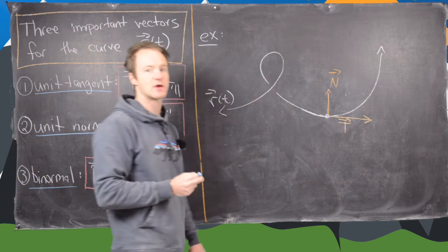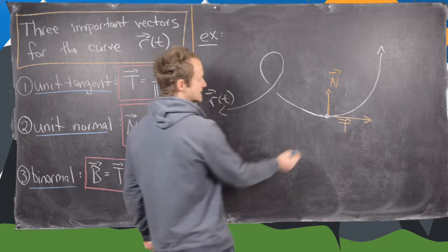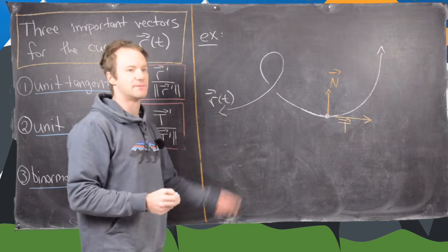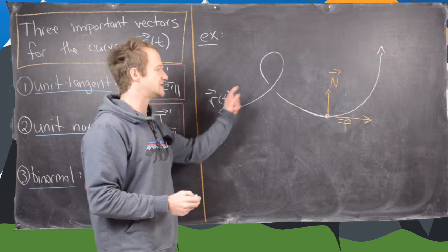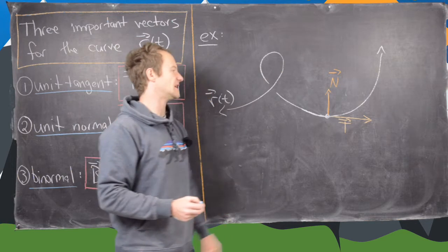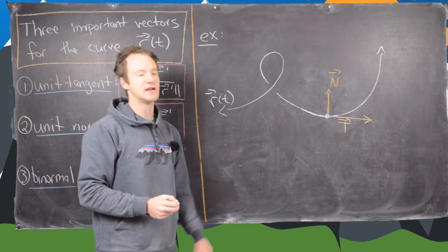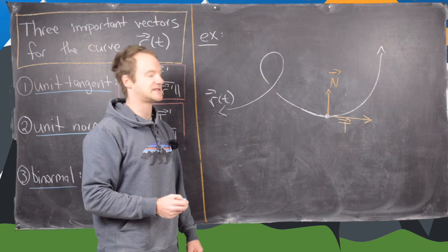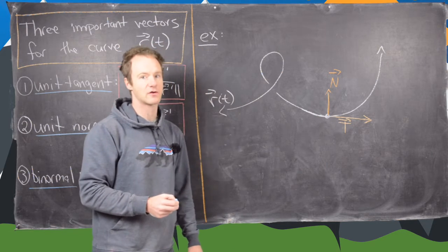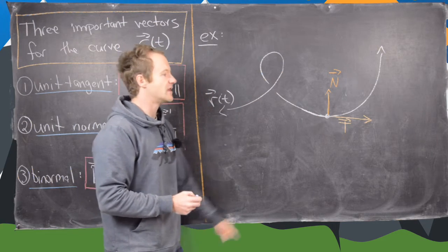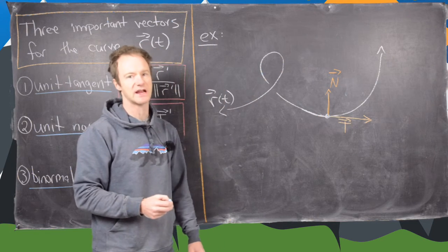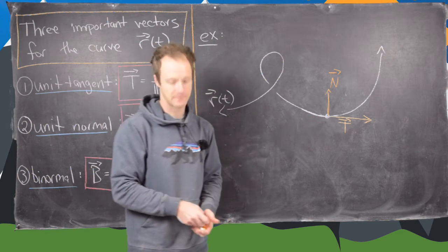In other words, if you were to write the equation of the chalkboard, its normal vector would be this binormal vector. So the binormal vector defines the plane that is containing this curve. Not all curves stay in one plane, so more generally the binormal vector defines the plane that is closest to containing the curve at a given point.